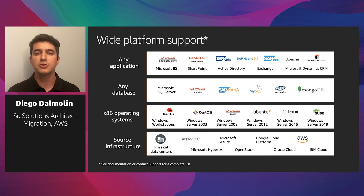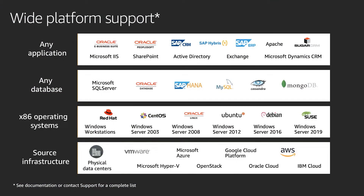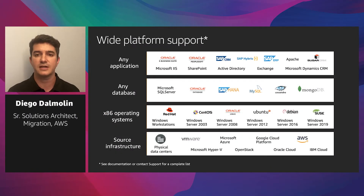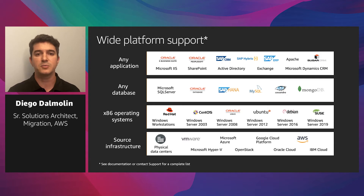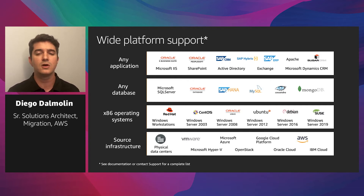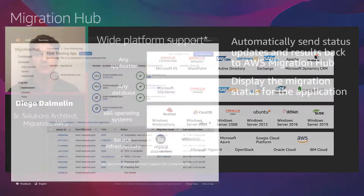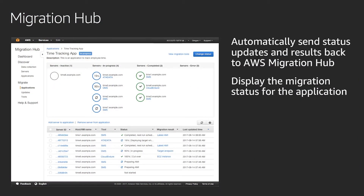With CloudEndure migration, you can migrate all applications and databases that run on supported versions of Linux and Windows. This includes Windows Server versions 2003 to 2019, and Linux distributions such as CentOS, Red Hat Enterprise Linux, Oracle Linux, SUSE, Ubuntu, and Debian. CloudEndure migration supports common databases including Oracle and SQL Server, as well as enterprise applications such as SAP. This solution is compatible with any OS from this list, regardless if it's physical, virtual, or running on a different cloud provider.